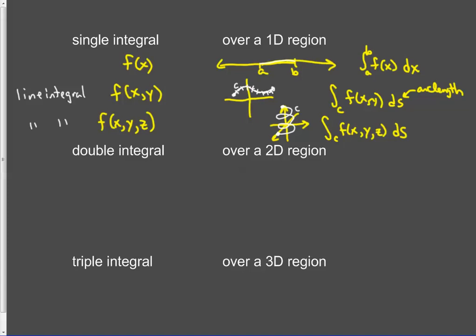Now, double integral. Again, we start with the traditional double integral where we're over a region of some sort in 2D. And we want to integrate our function of two variables over a 2D region. And it's weighted by area.